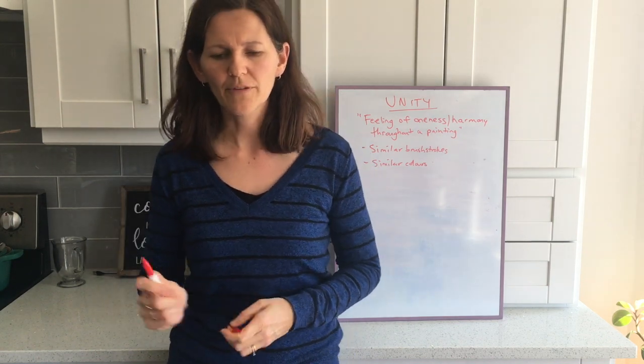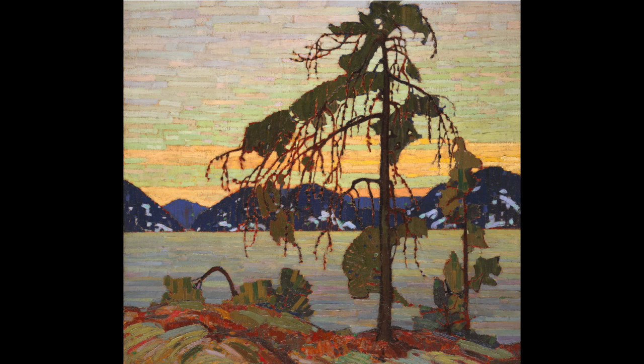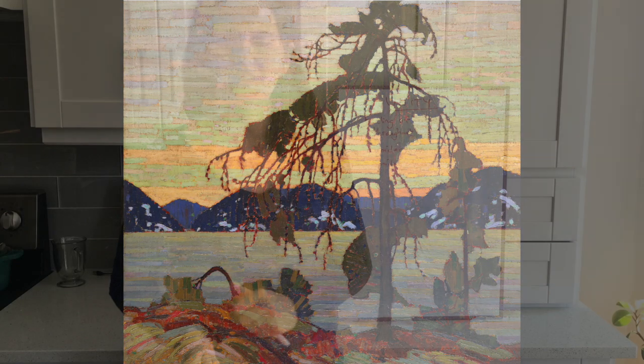Let's have a look at some examples. Here we have a Tom Thompson painting. If I were to ask you what is unifying this painting in terms of brush strokes, and you looked closely, you would notice that Thompson is using a whole bunch of tiny little long, thin block shapes. Look in the sky and you'll see those block shapes - he puts them in the sky, the mountains, the tree, the rock, and the lake. He's unifying the painting through similar brush strokes.